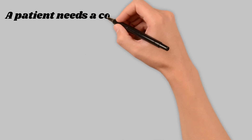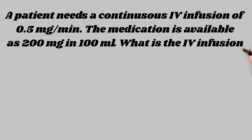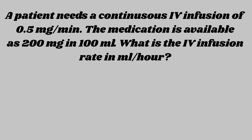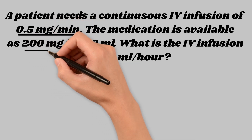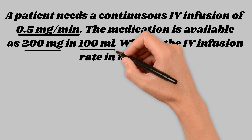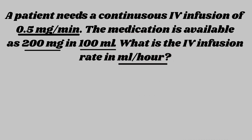Okay, let's do it again — this time a little more complicated. A patient needs a continuous IV infusion of 0.5 milligrams per minute. The medication is available at 200 milligrams in 100 mLs. What is the IV infusion rate in mLs per hour? Just like last time, we're going to underline all the keywords: 0.5 milligrams per minute, 200 milligrams, 100 mLs, and then what we're looking for — mLs per hour — which also needs to be underlined.